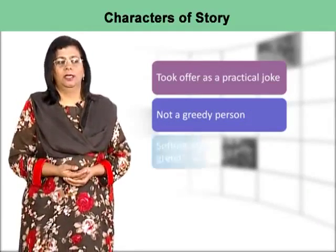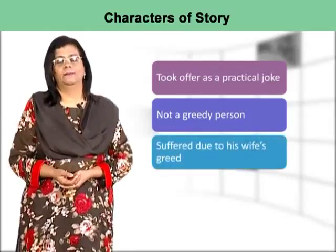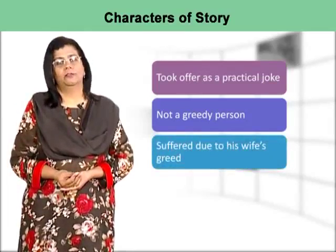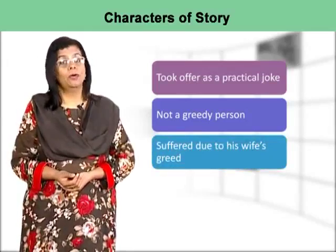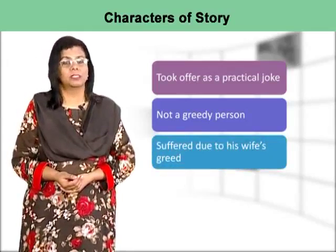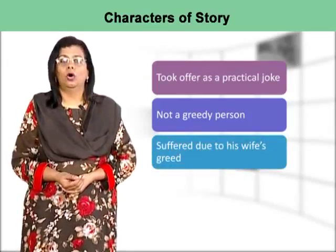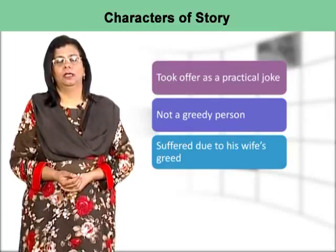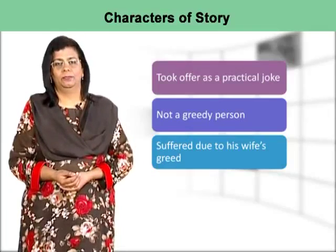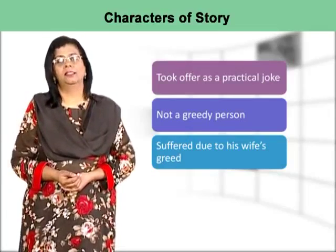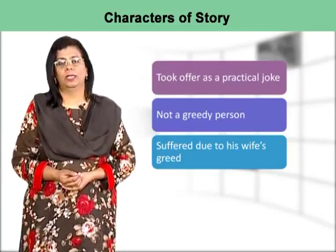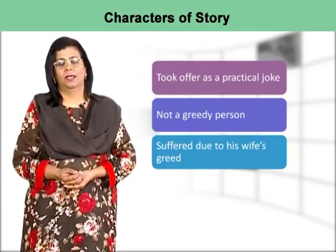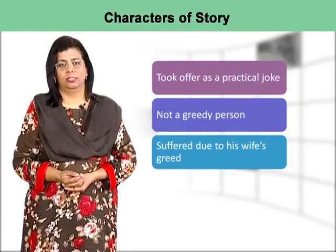Unfortunately, he is the one who suffers because of his wife's greed. When Norma presses the button, Arthur — not being the greedy one — loses his life, and his insurance money of $50,000 comes to his wife.